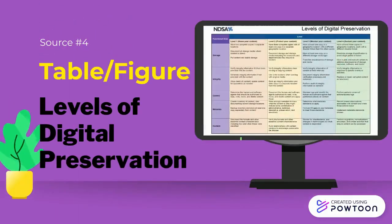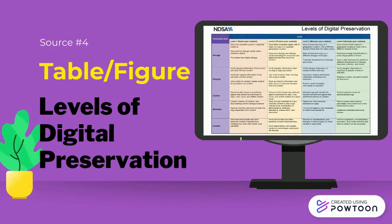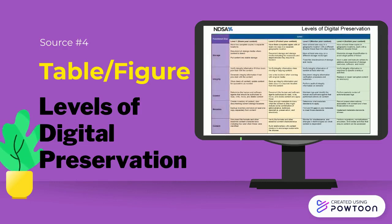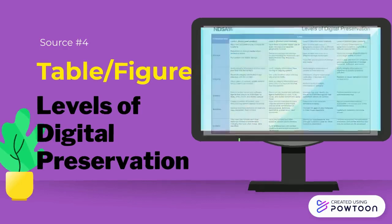The fourth source I will be exploring is the Levels of Digital Preservation Matrix by the NDSA. This chart is organized by function area and the level achieved in that area. The levels aren't necessarily based on what is good or bad, but serve to fit the publisher's individual preservation goals.